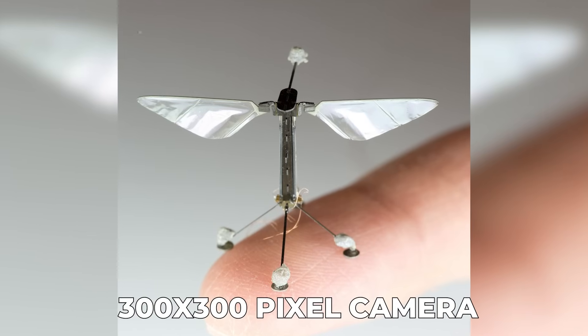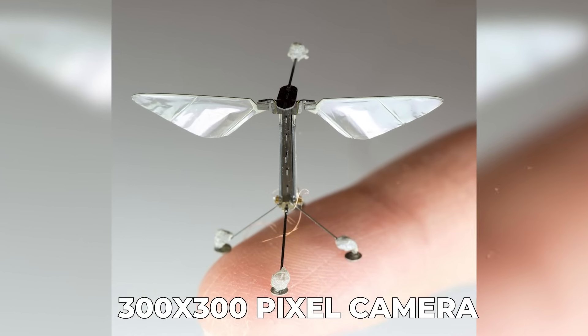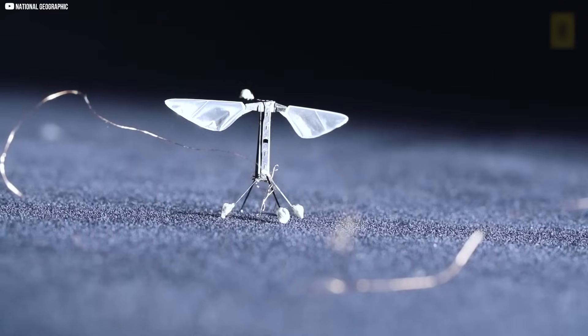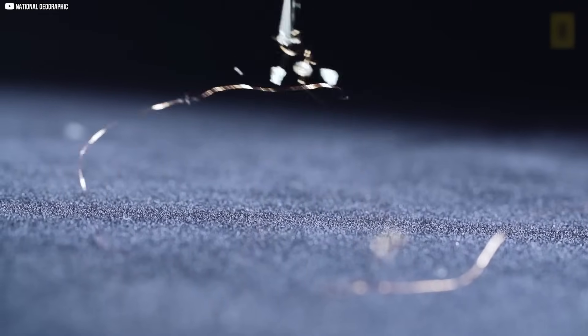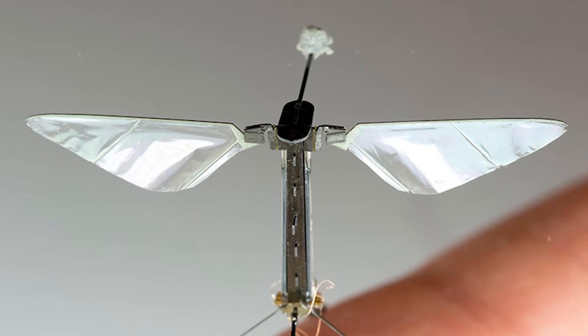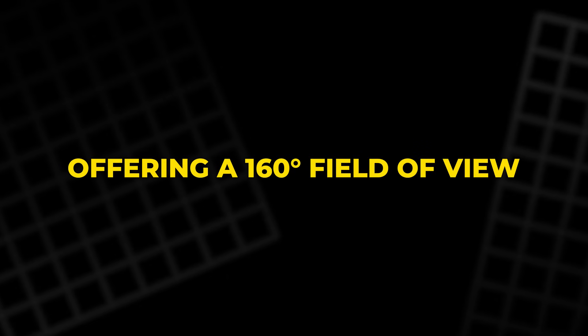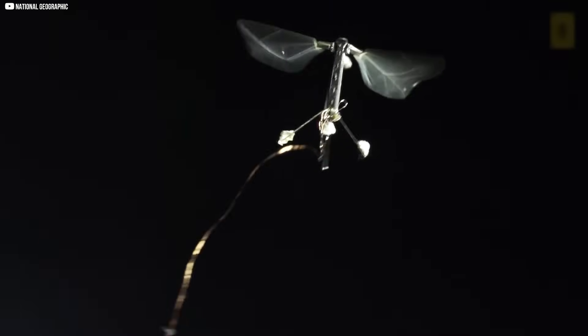The drone is fitted with a 300x300 pixel camera, which, though low resolution, is enough to spot critical details like a person or a weapon in close range. This camera is paired with a fisheye lens, offering a 160-degree field of view, ensuring the drone captures a wide area with just a single yaw.